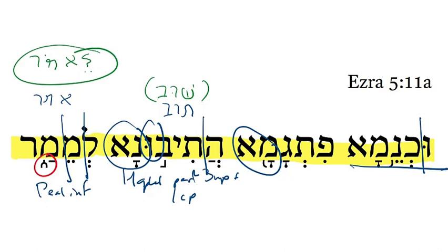So back to the beginning: 'And accordingly, the reply was returned to us saying.' The 'saying' here is acting like a colon for what is to come. We're going to use the next video to show this use of alef-mem-resh in Aramaic outside of the Bible.